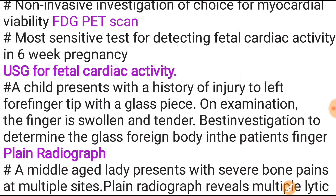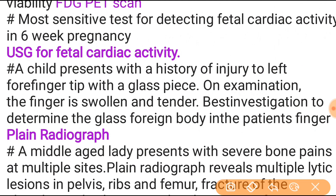Most sensitive test for detecting fetal cardiac activity at six weeks of pregnancy is ultrasonography — this is a frequently repeated question. Next: a child presented with history of injury to the left forefinger tip with a glass piece; on examination the finger is swollen and tender. Best investigation to determine the glass foreign body in the patient's finger is plain radiograph.